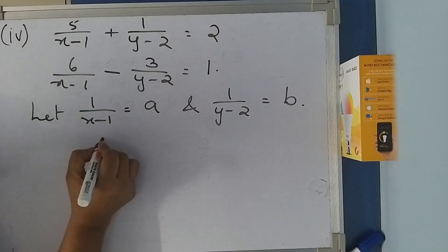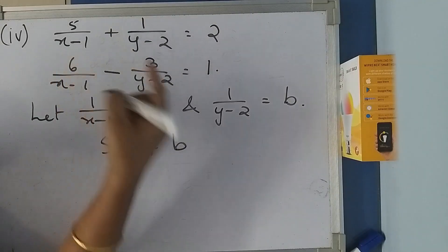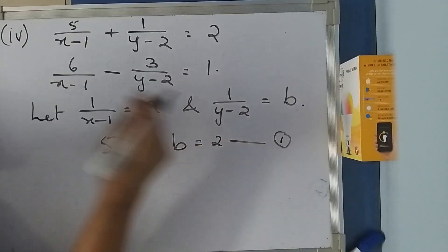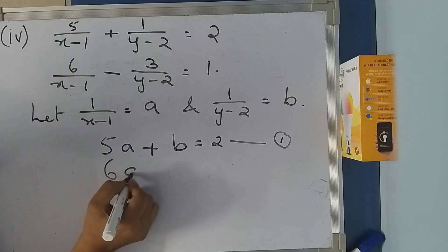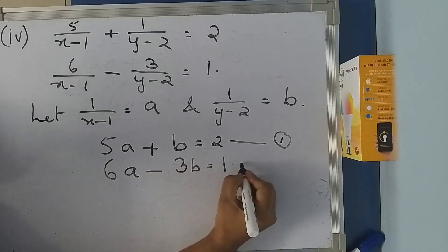So this first equation becomes 5A + B = 2, equation number 1. The second equation becomes 6A - 3B = 1, equation number 2.